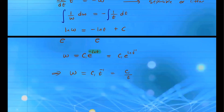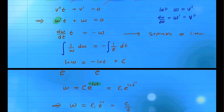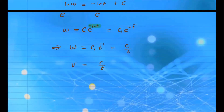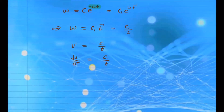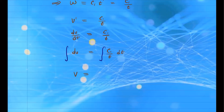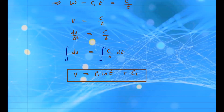Since w equals v prime, we have dv/dt equals c1 over t. Separating variables gives dv equals c1 over t times dt. Integrating both sides: on the left we get v, and on the right we get c1 ln of t — no absolute value needed since t is positive — plus another constant c2. So v equals c1 ln of t plus c2.